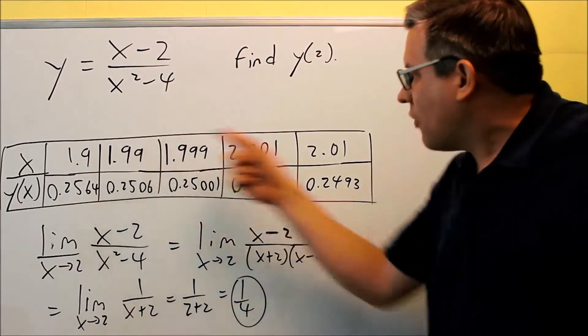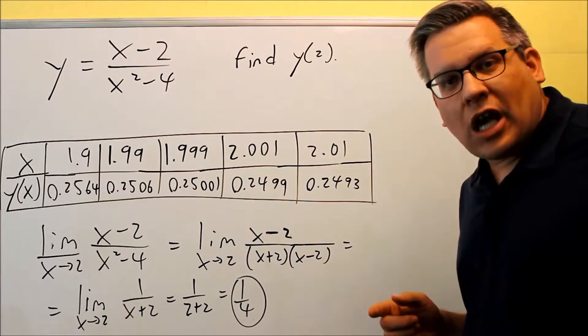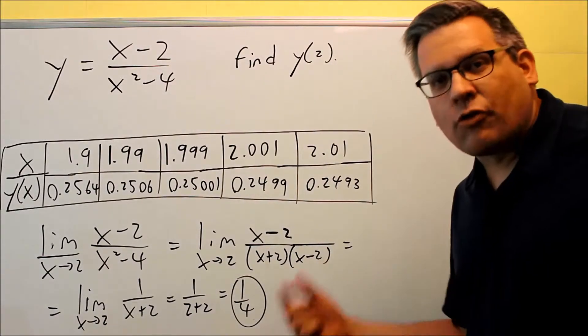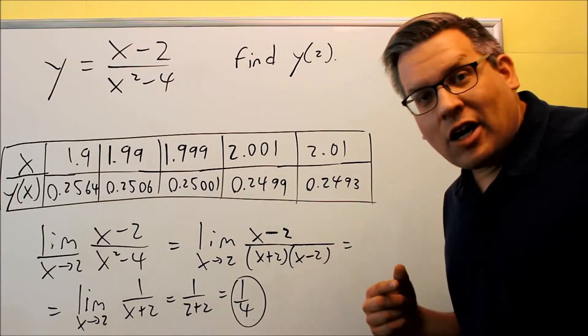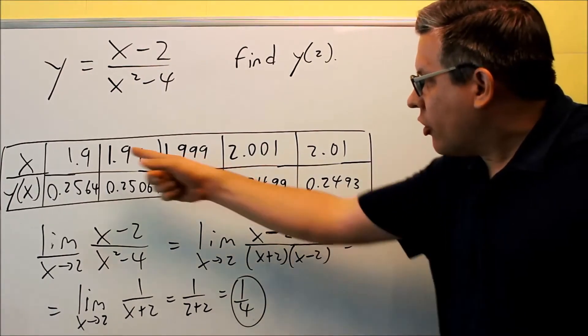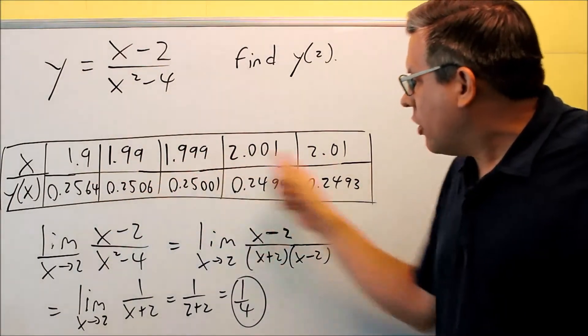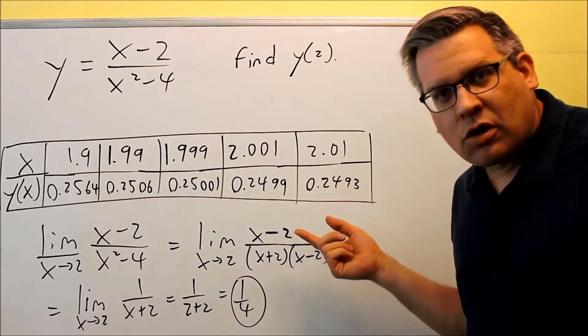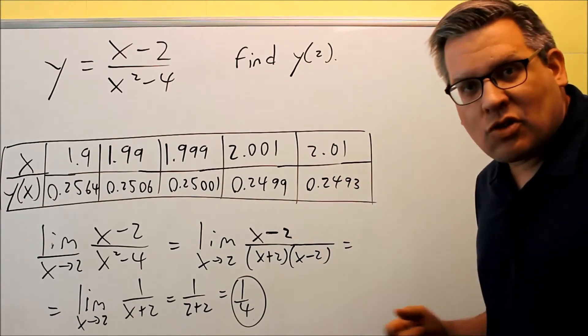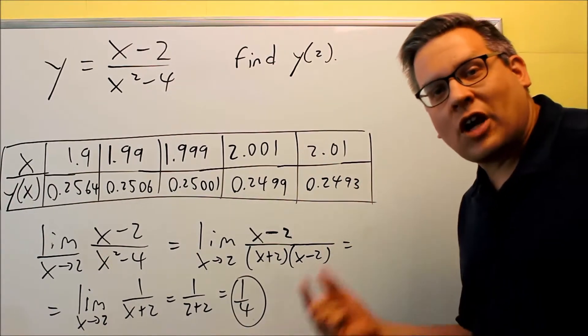So again, we approach that from both sides. The limit has to approach the same number from both sides in order for it to be defined. So if I had one going this way, and I had one number, and these are approaching a completely different number, then I know the limit would not exist. So it has to approach the same number from the left and from the right.